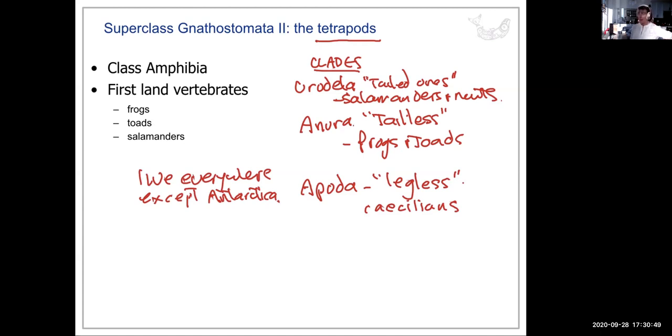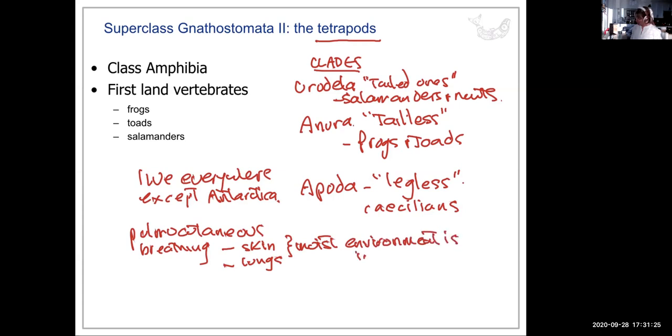So they have pulmocutaneous breathing. They breathe through their skin, but they also have rudimentary lungs. So they do need to be in a moist environment because of the skin breathing. Moist environment is important for amphibians.